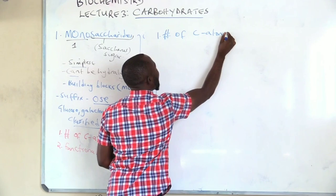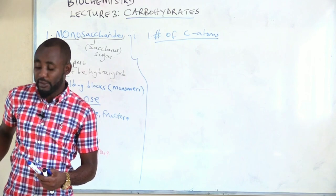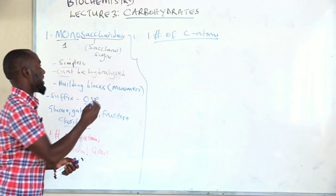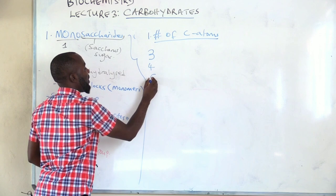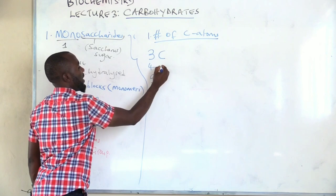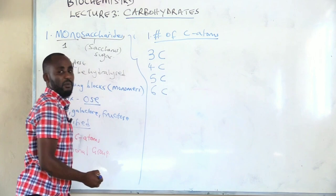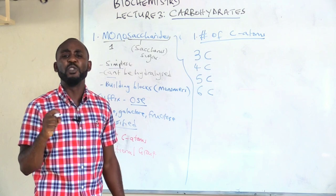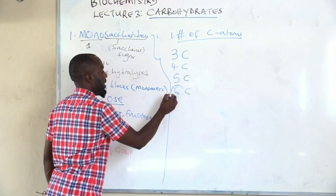Classification number one is by number of carbon atoms. There is no carbohydrate on earth with one carbon atom, and none with two carbon atoms — they start from three. We have carbohydrates with three, four, five, six, and so on. In this course, our emphasis will be on carbohydrates with three, four, five, and six carbon atoms, but our detailed discussion is focused on those monosaccharides used to generate energy in the human body, especially those with six carbon atoms.